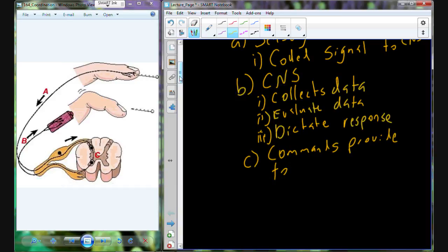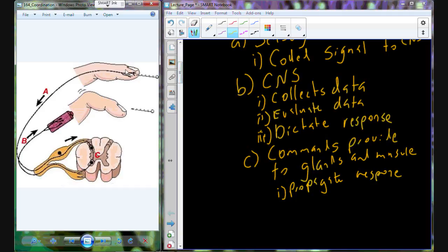And the response that gets dictated, that dictation of a response, the command is provided to glands and muscles that will propagate the response. So here in this case, the pin comes in and pokes into your finger. That sensory nerve ending picks up the information. That sensory coded information comes back into the central nervous system, loops in an arc, up to a muscle in the finger that causes the finger to recoil away from that noxious stimuli. It's a very simple kind of arc pathway, and for the most part we can model very complex reactions to stimuli in this format.